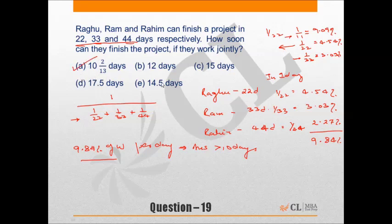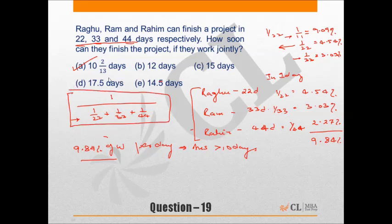If the answer choices were close to each other, the percentage method would not be reliable, and a precise fraction calculation would be needed. But because the choices are spread apart in this question, the percentage approach gives the answer faster. Let's move to the third exercise.